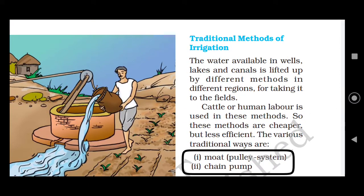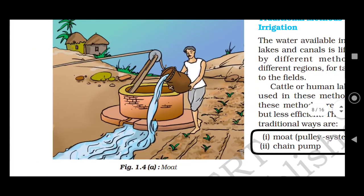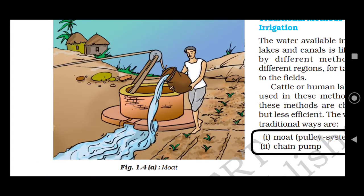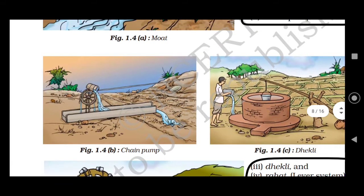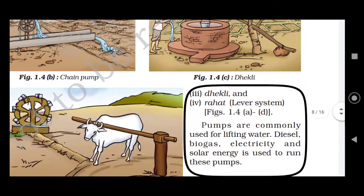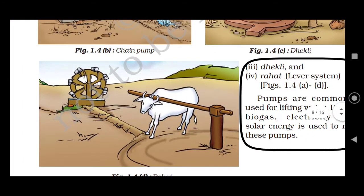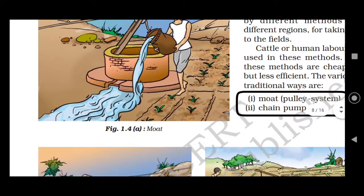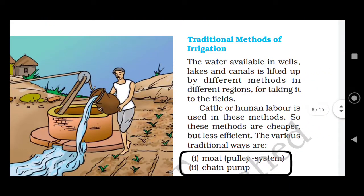The traditional methods of irrigation were the moth and the chain pull. As you can see, this is called the moth, and this is the chain pull. These were the types of irrigation methods which we call traditional.